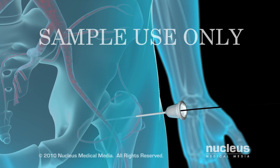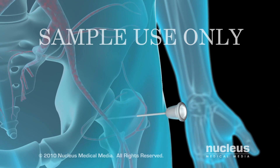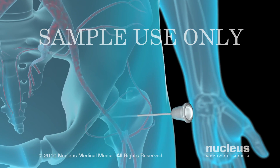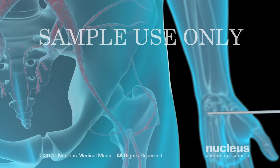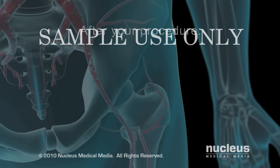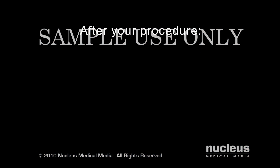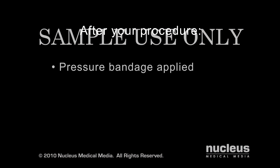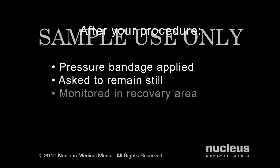At the end of the procedure, your doctor will remove the catheter through the original insertion site. After your procedure, a pressure bandage will be applied to the catheter insertion site, and you will be asked to lie still to prevent bleeding.